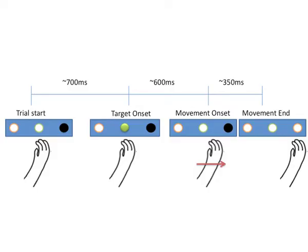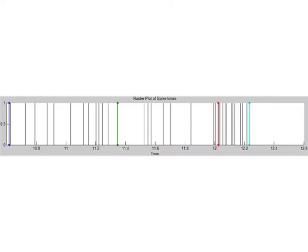The monkey executes a standard left-right instructed delay, center out, reach task. Signal recording, conditioning, and spike sorting has been carried out at the National Brain Research Center at Manessar. Only offline spike data has been used for analysis and experimentation.